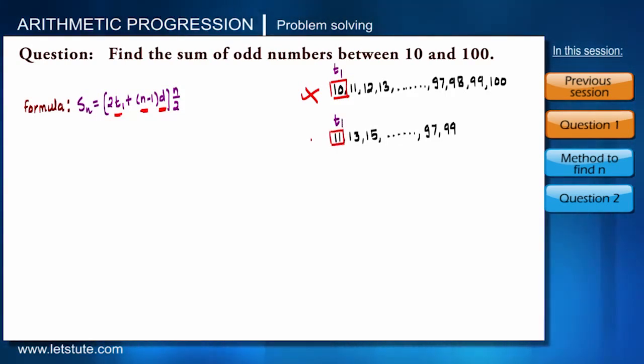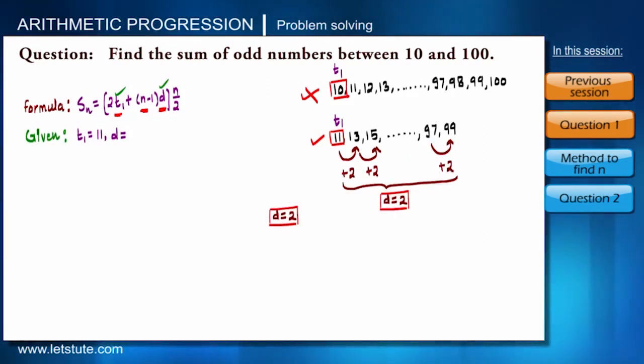Let's come to the second parameter: the common difference. We all know that even numbers or odd numbers always occur alternatively, so the common difference will always be of 2. So D equals 2.